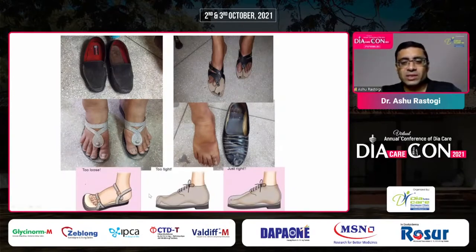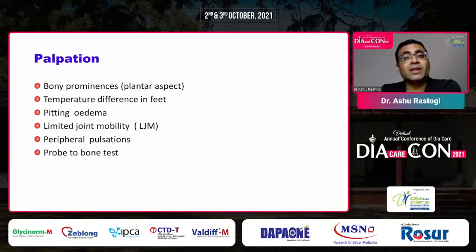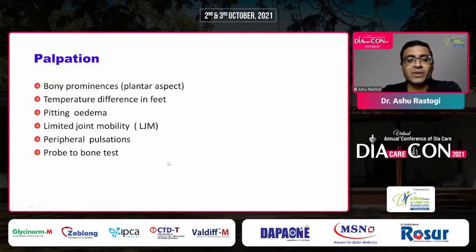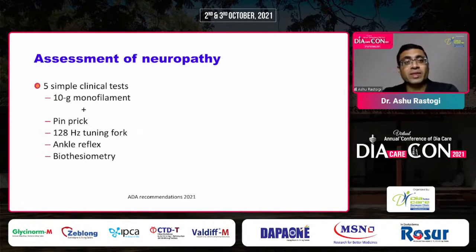Never have footwear that is too loose or too tight with crowding of the toes — it should be just right. Palpate for bony prominences, and temperature of the foot is very important. There are now devices using laser and infrared technology to measure temperature, which are useful for identifying patients at increased risk of foot ulcers. Also assess for pitting edema, limited joint mobility, abnormal pulsations, and perform a probe-to-bone test.